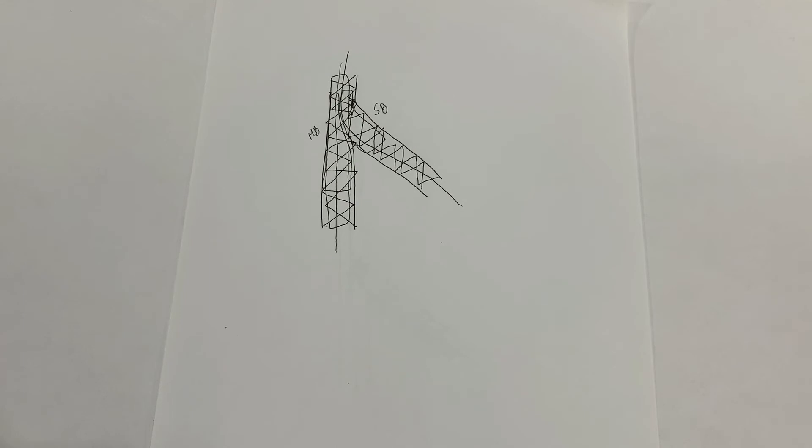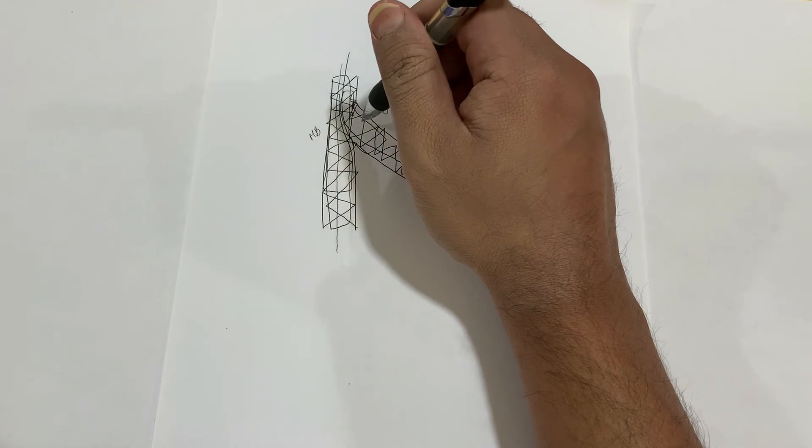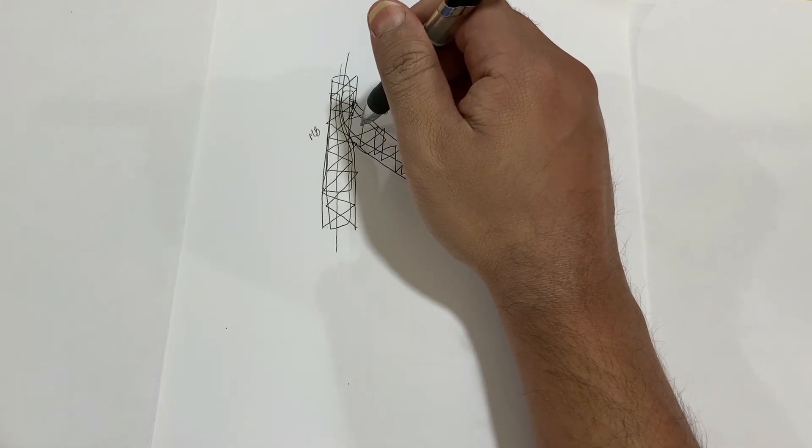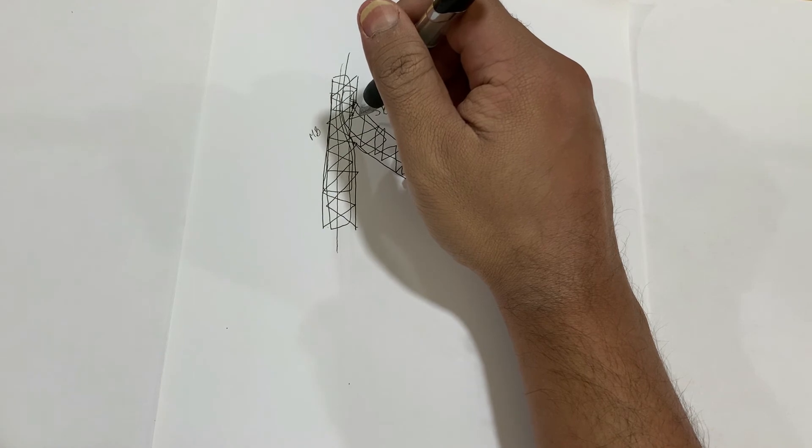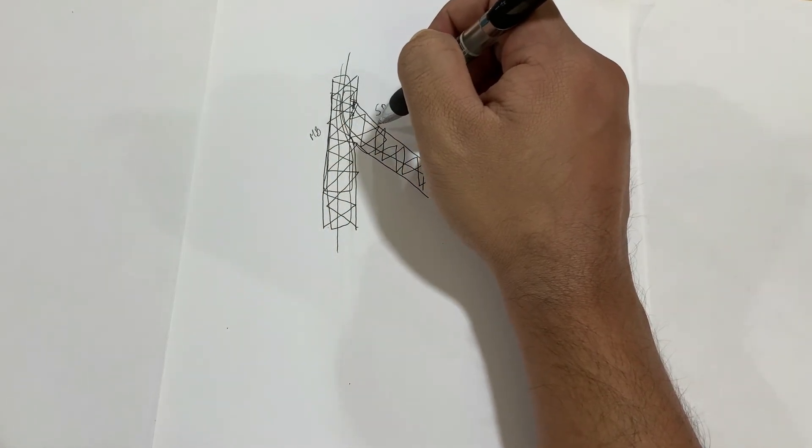Now I must tell you that this is a modified mini crush technique. In modified mini crush technique, we use an NC balloon in the main branch to crush the side branch stent. In the classic mini crush technique, you use a stent to directly crush the side branch stent.